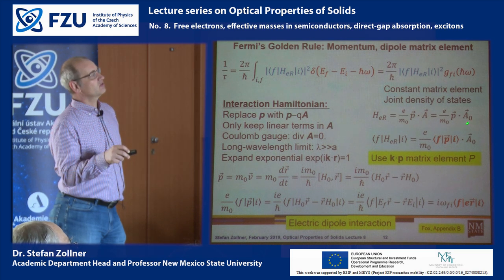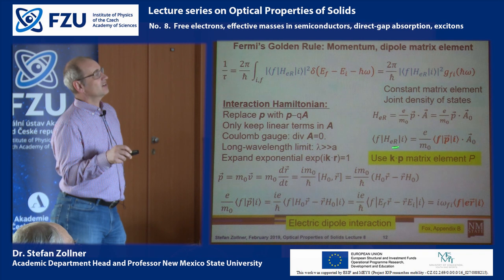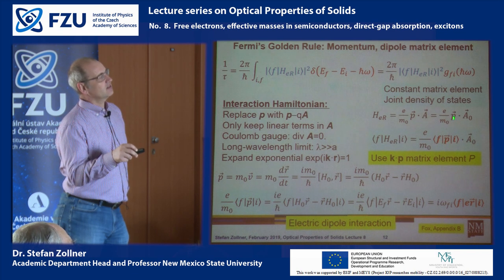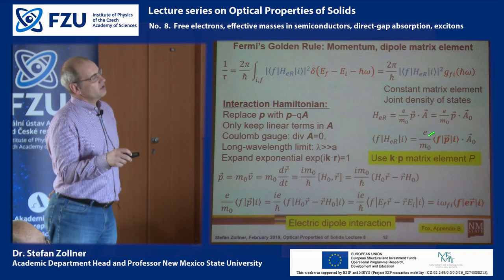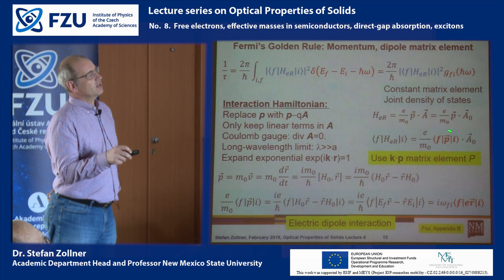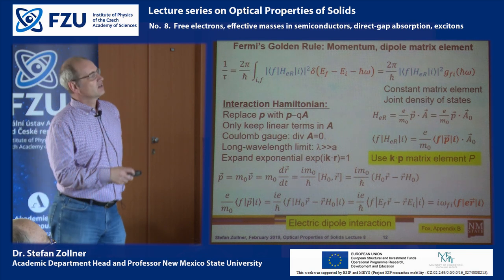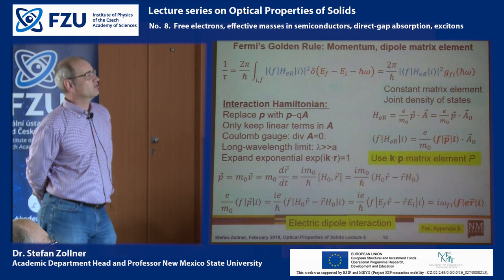So the perturbation operator reduces to P dot A, and since we work in the long wavelength limit, it further reduces to the amplitude of the vector potential. The interaction matrix element becomes e over m times the polarization unit vector dot P matrix element, multiplied by the amplitude of the vector potential. This matrix element is exactly the K dot P matrix element, which we know from effective mass measurements. For most semiconductor materials, this matrix element P is around 20 eV in appropriate units.